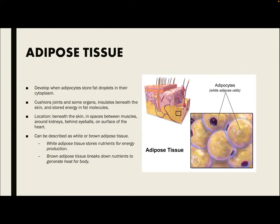Next, we have adipose, also known as fat tissue, where adipocytes store fat droplets in their cytoplasm. They are located beneath the skin, in the spaces between the muscles, around the kidney, behind the eyeballs, and on the surface of the heart. They can be described as white or brown adipose tissue — white adipose stores nutrients, while brown adipose breaks down nutrients.